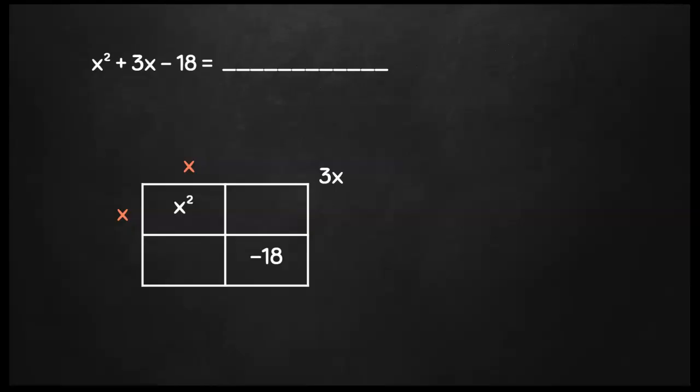Then I look for two numbers that'll multiply to negative 18. That gives me negative 3 and 6. When I finish multiplying inside my box, I want to make sure that those add together to get me my outside corner. So negative 3 plus 6, yes, that gets me 3x. So I know that my numbers are all working correctly. I can write my factors as x minus 3 and x plus 6.